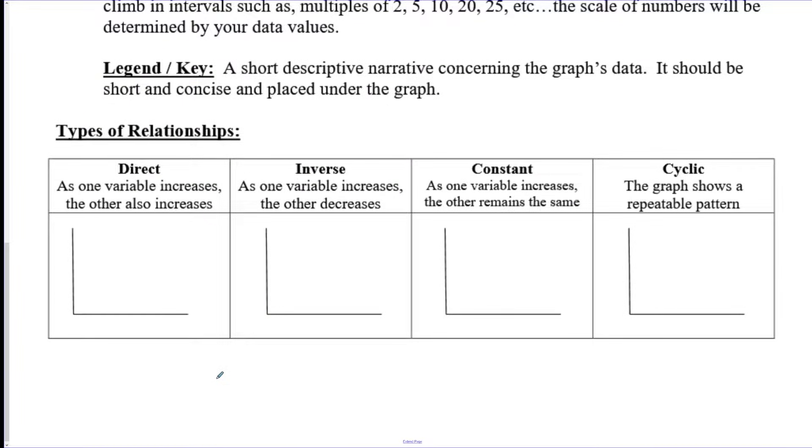There are four types of graphing relationships that you should know. A direct relationship means as the x-axis is increasing the y-axis is also increasing so the line would look like this. You could also get a curved line and it would mean the same thing. Inverse can also be called indirect and this is as one variable increases the other decreases so it's going to look like this or it can look like the curved version of it. Constant is when one variable increases the other stays the same so it's a flat line, and cyclic is some sort of repeating pattern so you might have something like this.